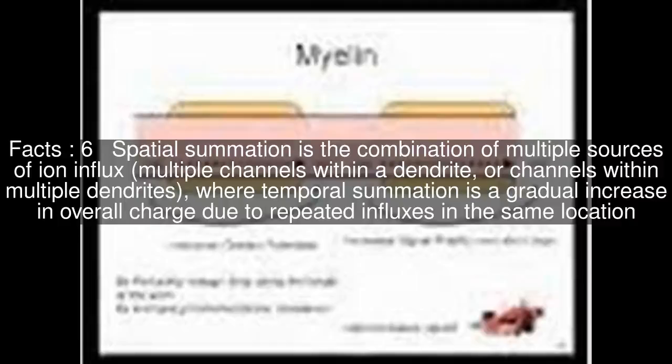Spatial summation is the combination of multiple sources of ion influx — multiple channels within a dendrite, or channels within multiple dendrites — whereas temporal summation is a gradual increase in overall charge due to repeated influxes in the same location.